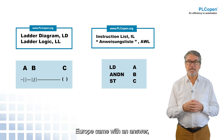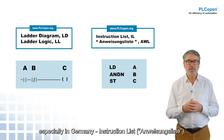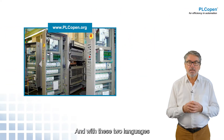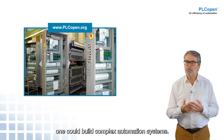Europe came with an answer, especially in Germany — Instruction List, Anweisungsliste. And with these two languages one could build complex automation systems.